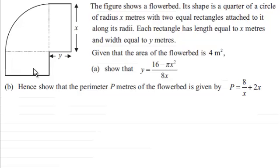Each rectangle has a length equal to x meters and a width equal to y meters. We're given that the area of the flowerbed is 4 square meters. What we've got to do is show that y equals (16 - πx²)/(8x), and then go on to show that the perimeter P meters of the flowerbed is given by P = 8/x + 2x.